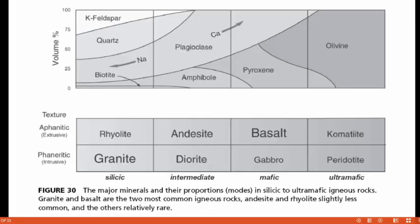This diagram shows major minerals and their proportions in silicic to ultramafic igneous rocks. Granite and basalt are the two most common igneous rocks. Peridotite and komatiite — where komatiite is the extrusive equivalent and peridotite the intrusive equivalent of ultramafic rock — both show high occurrences of olivine with some pyroxene. Gabbro and basalt show amphibole, pyroxene, and a good occurrence of olivine with plagioclase.